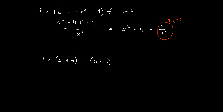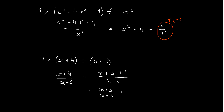Let's do the next one. We've got x plus 4 over x plus 3. And you might be thinking, how am I going to divide this when I haven't taught you polynomial long division yet? But this is going to be x plus 3 plus 1, over x plus 3, which is x plus 3 over x plus 3 plus 1 over x plus 3. The answer is 1 plus 1 on x plus 3. And again, it's not a polynomial because there's a power of negative 1 here.